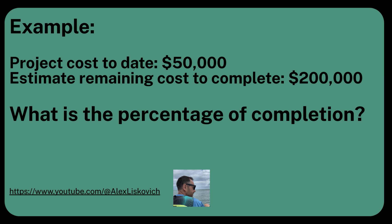They may try to trip you up by giving you additional information in the question — things that are not relevant to finding the percentage of completion. So on the exam, find the proper terms and their numbers. I'm just going to assume you've read the question and found what's relevant. So: project cost to date is fifty thousand dollars, and the estimated remaining cost to complete is two hundred thousand dollars.